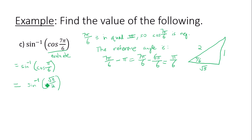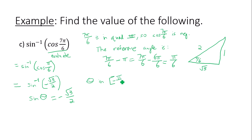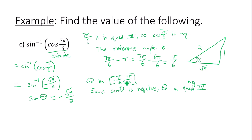Now this looks like something from a previous section. The goal is to figure out: sine of what angle is negative square root of three over two? With regard to this, inverse sine is only defined in the interval from negative pi over two to pi over two. Since sine of theta is negative, theta would have to be in quadrant four — negative quadrant four — because that's where inverse sine is defined.